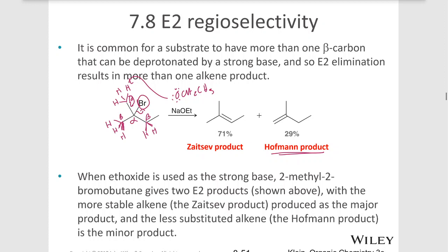This is the more substituted product — actually, I'm sorry — that's the less substituted product, and this is called the Hoffman product. In this case this Hoffman product is di-substituted.